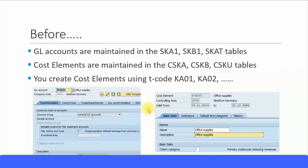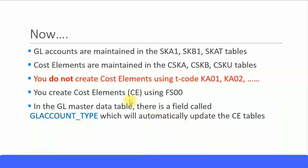Things are changed now in Simple Finance. In Simple Finance, the GL accounts are still maintained in the same SKA1, SKB1 tables, and cost elements are still maintained in the CSKA, CSKB, and CSKU tables. However, you do not create cost elements using transaction codes KA01 or KA02. Cost elements will be created using FS00, the GL account creation transaction. You only create GL accounts — all cost elements are now going to be GL accounts in Simple Finance.